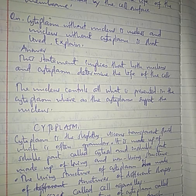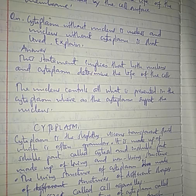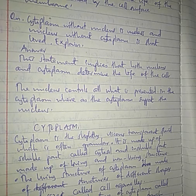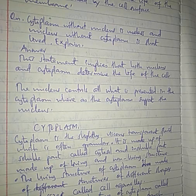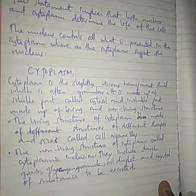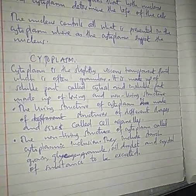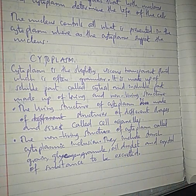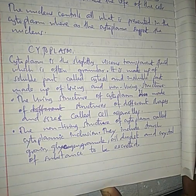The nucleus controls all activities of the cell — it controls what is carried out in the cytoplasm — while the cytoplasm supports the nucleus. In short, cytoplasm is a slightly viscous, transparent fluid which is often granular.